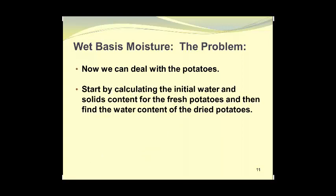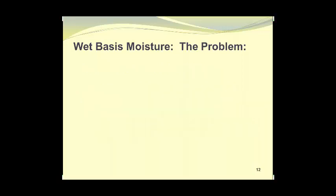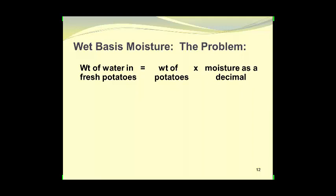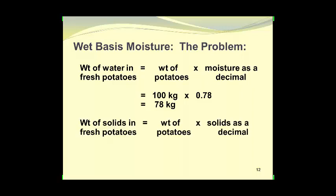Now we can deal with the potatoes. We start by calculating the initial water and solids content for the fresh potatoes and then find the water content of the dried potatoes. The weight of water in the fresh potatoes is 100 kilograms times 0.78, giving 78 kilograms of water. The weight of solids is 100 kilograms times 0.22, giving 22 kilograms of solids in the fresh potatoes.